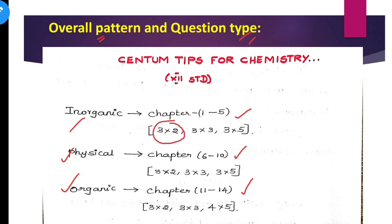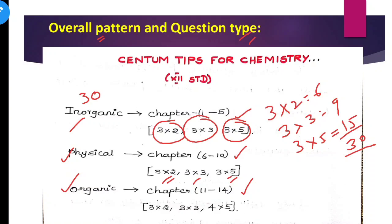Inorganic has 3 two-marks, 3 three-marks, and 3 five-marks, which means 3x2=6 marks, 3x3=9 marks, 3x5=15 marks. So 24, 30 marks from Inorganic. In the same way, Physical has 30 marks, and Organic has 3 two-marks, 3 three-marks, and 4 five-marks, which means 35 marks. So total we have 95 marks.